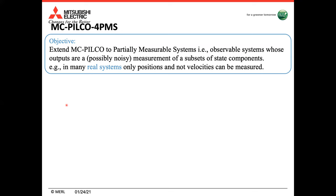While this algorithm performs well in simulation, we are interested in working with real-world systems. So we extend MCPILCO to partially measurable systems — observable systems whose outputs are a possibly noisy measurement of a subset of state components. For example, in many mechanical systems, only positions and not velocities can be measured directly. The main idea is to consider two different state observers: one for model learning and one for policy learning.